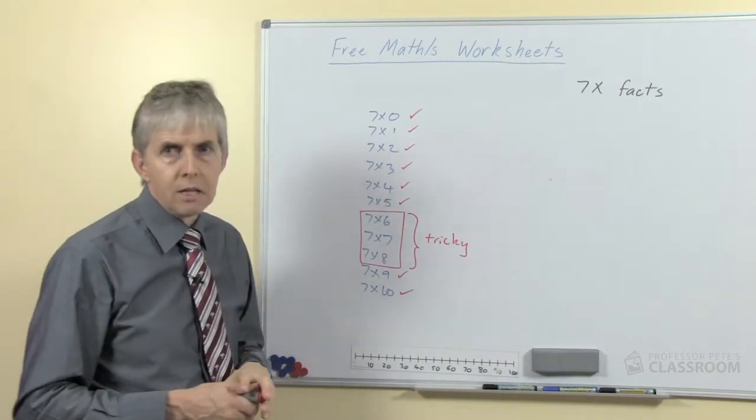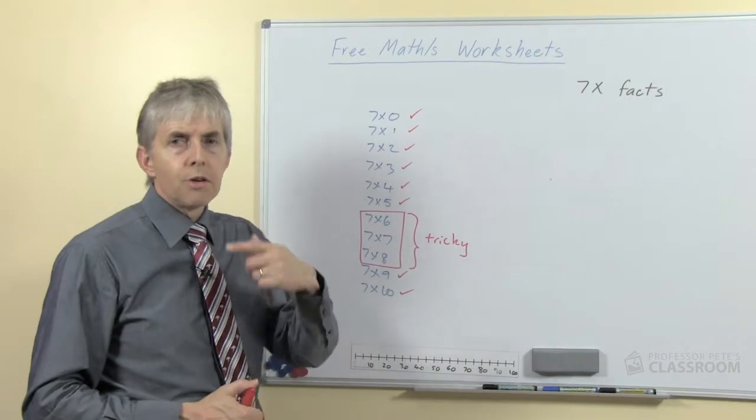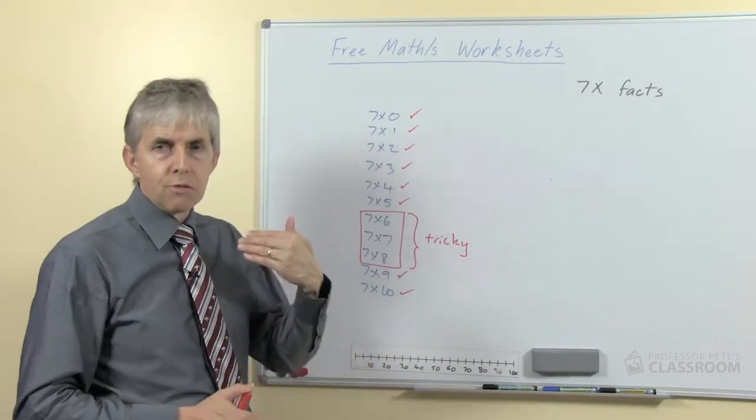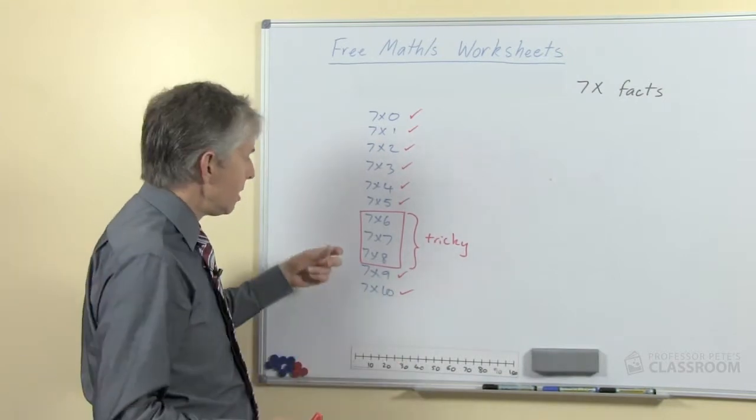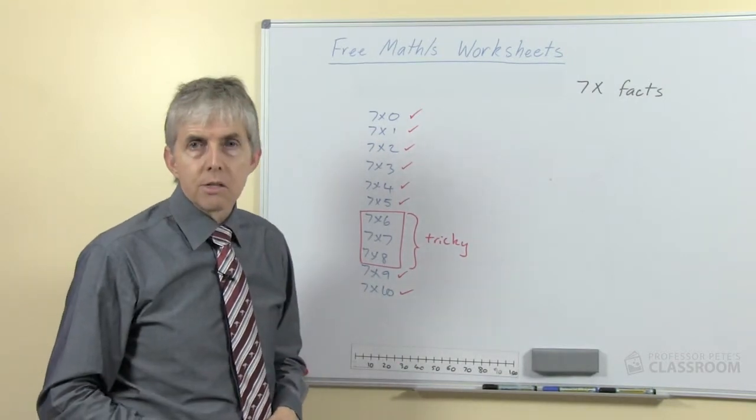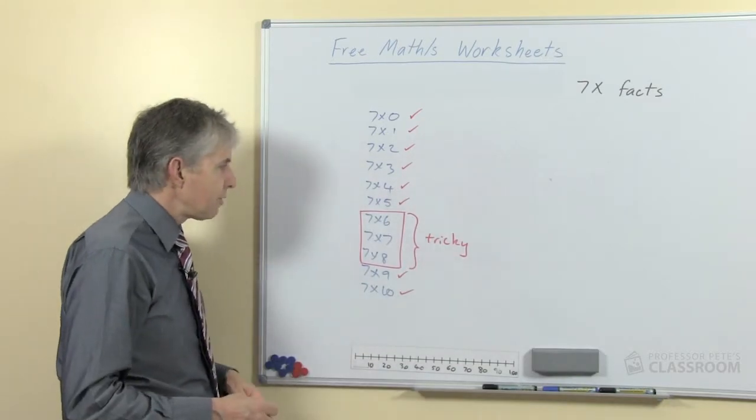I remember telling students when we had number fact competitions regularly each week, that if I wanted to trip them up, if I wanted to give them the hardest number fact I could think of up to ten times ten, that was seven times eight. And so they all went home and learned that particular number fact which of course was a benefit to them.